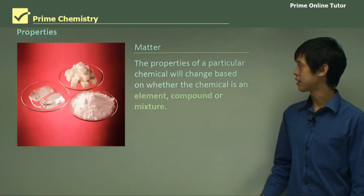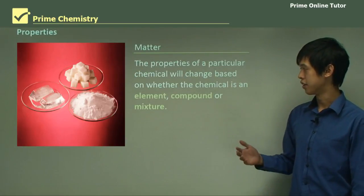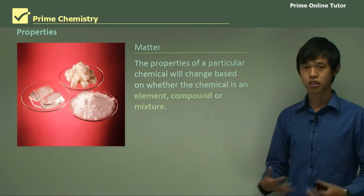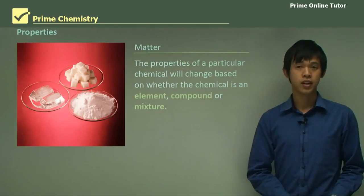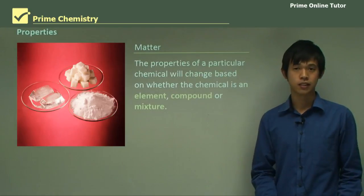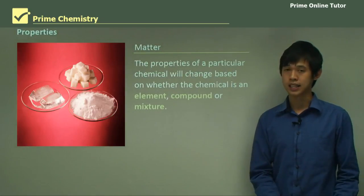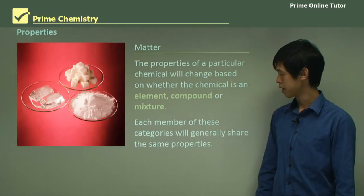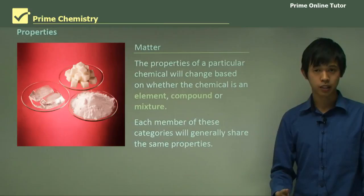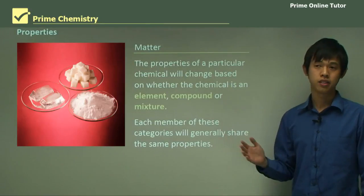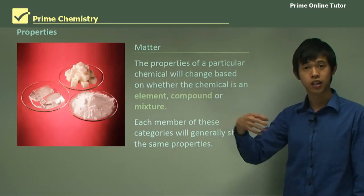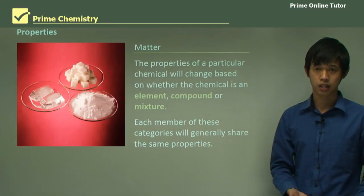So firstly we talk about properties of matter. The properties of a particular chemical will change based on what that chemical is — whether it's an element, a compound, or a mixture. Those three things have very different properties from one another. An element will have very different properties to a compound, and a compound may have different properties to a mixture. Each member of these categories will generally share similar properties, so lots of elements will share similar properties to other elements, and compounds of the same type should show similar characteristics.